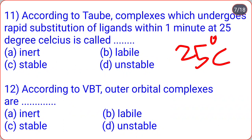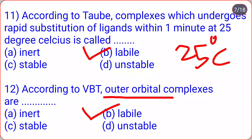According to Taube, complexes which undergo rapid substitution of ligands within one minute at 25°C are called labile — correct option B. According to valence bond theory (VBT), outer orbital complexes are also labile.